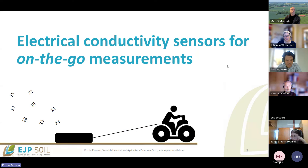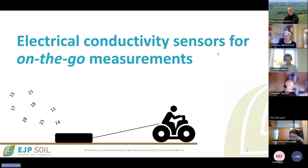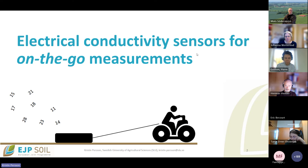Hello everybody. As Johanna mentioned, my name is Christine, and we all work at the Swedish University of Agricultural Sciences, where we focus on precision agriculture and pedometrics. What we want to do to a large extent is understand the spatial and temporal variability in crop growth conditions so that we can adapt management practices accordingly. We are very fond of these types of tools because you can use them to quickly get an overview of spatial variation across a few fields, a farm, or even a landscape.